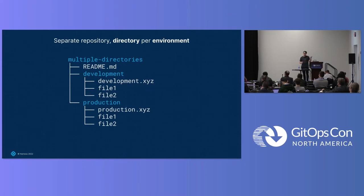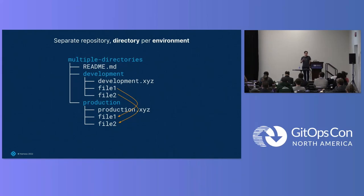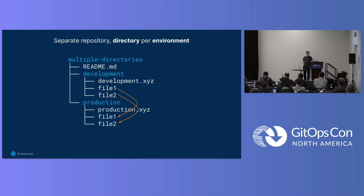Next, let's talk about a separate repository with directories per environment — this is very similar to the example from Bring Central. Each environment gets its own directory, and when we promote changes we are ideally just copying files — drag and drop. We shouldn't have to worry about differences in these files; the promotion should be a copy operation. Development and production specific files will have intended differences, but everything else should just drag and drop. This is what Argo recommends, and I believe Flux as well. Organizations like Adobe and Intuit are definitely using this method.